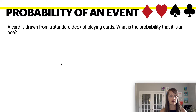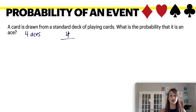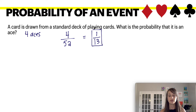Let's do an example. A card is drawn from a deck — what's the probability that it's an ace? In a deck of cards, you have four aces: the ace of diamonds, the ace of hearts, the ace of spades, and the ace of clubs. So the probability of the event is 4. The sample space is 52 cards in a deck. Dividing 4 by 52 and reducing by dividing by four gives you 1 out of 13 — one out of every 13 cards should give you an ace.